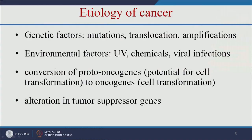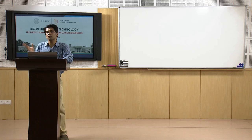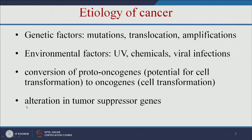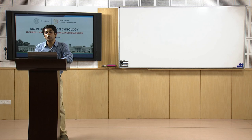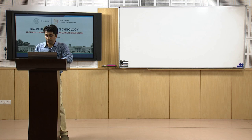What is happening in cancer? The conversion of proto-oncogenes to oncogenes. Each cell has proto-oncogenes; if these are converted into oncogenes, a normal cell becomes a cancer cell. Also, alteration in tumor suppressor genes — each cell has tumor suppressor genes which suppress tumor growth — and if there is some alteration in these genes, there is a high chance of getting tumor or cancer.